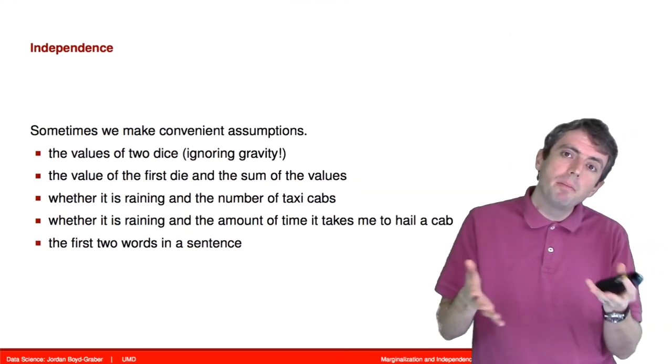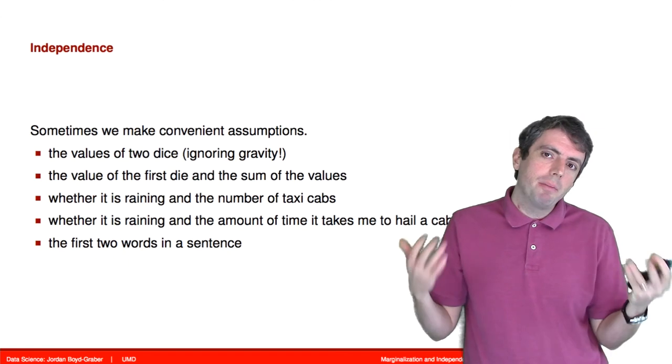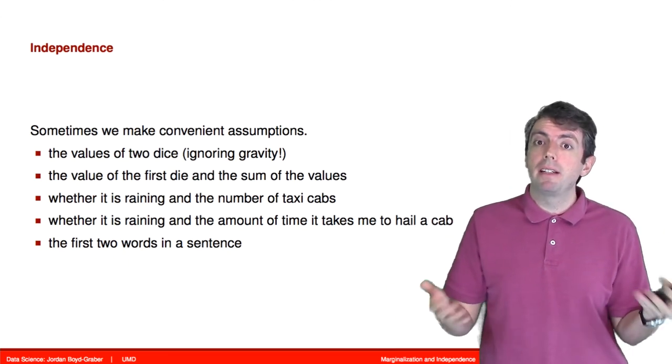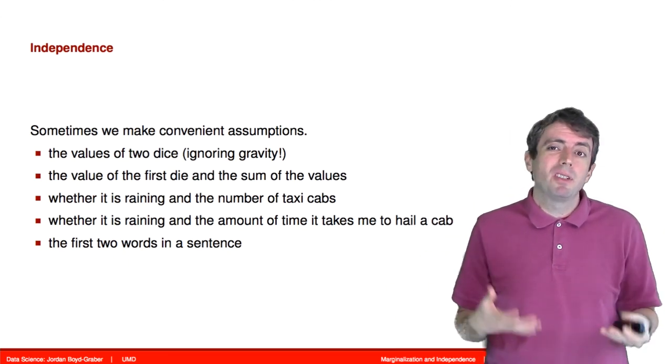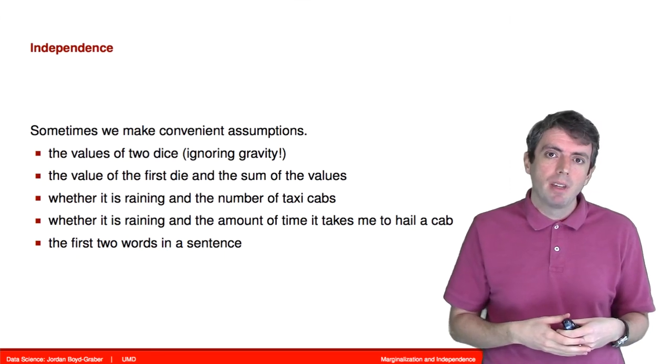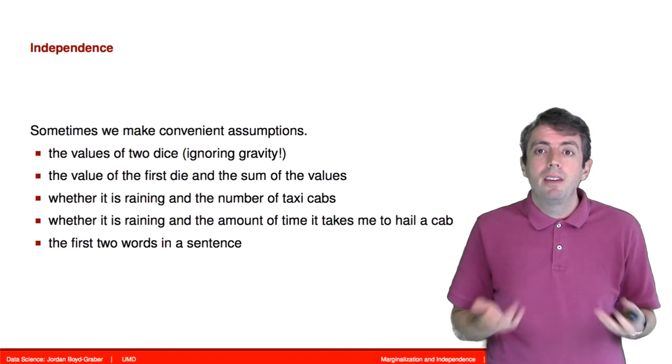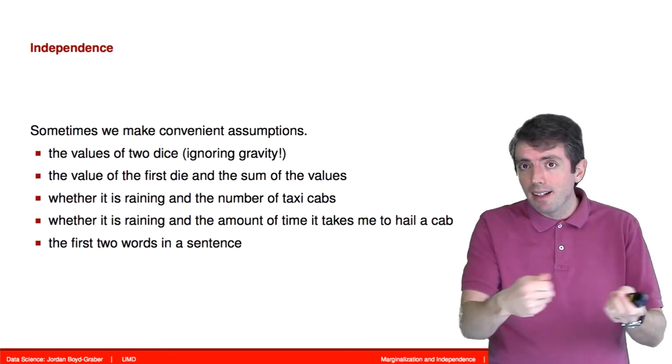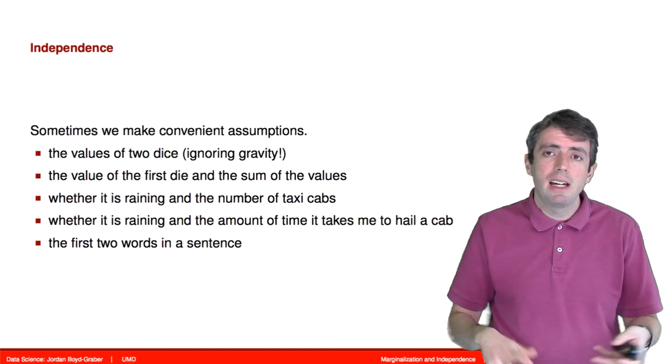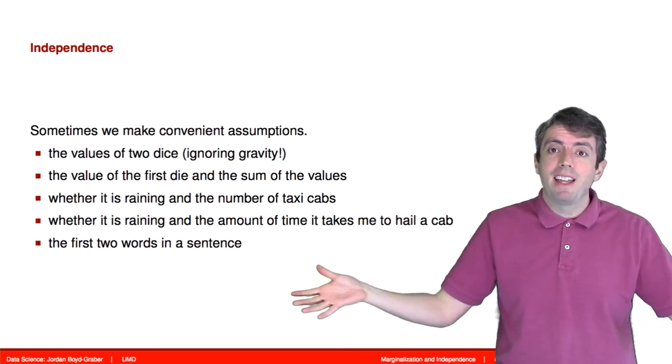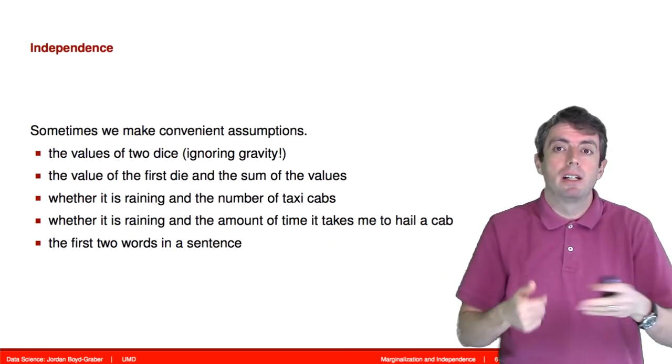But then there are lots of cases in between. And so sometimes we make assumptions about independence, even though those assumptions are not strictly justified. And so, for example, when we roll two dice, they're not strictly independent. There are gravitational interactions between those two dice, but they're so weak that it is just silly to try to model that.